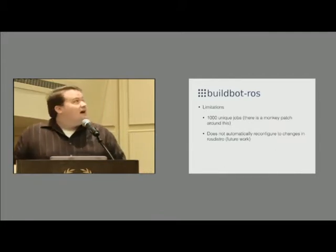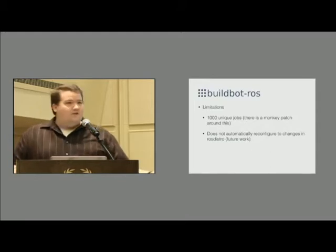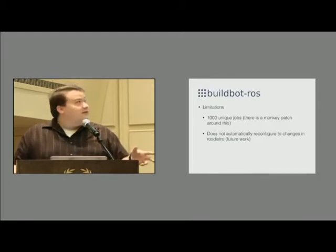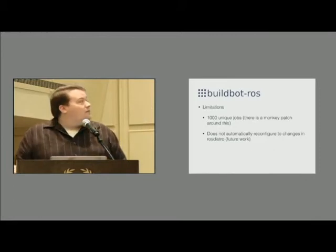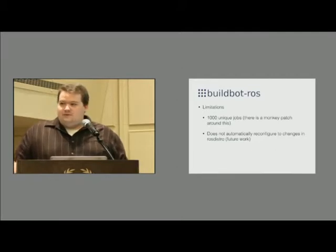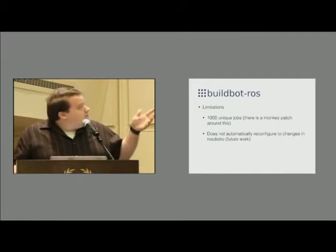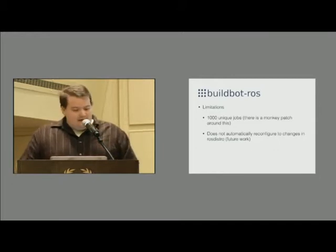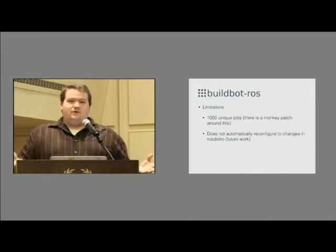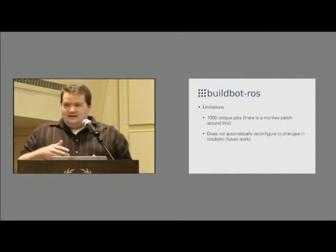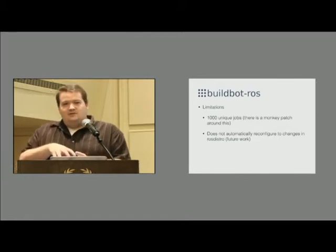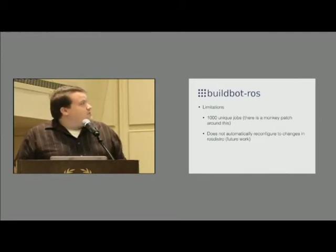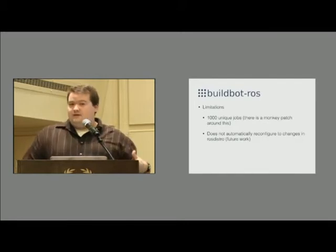As always, there are some limitations. In particular, there's one baked into BuildBot itself: it can really only handle about 1,000 unique names. You can actually bump that up with a little monkey patch applied to the BuildBot Python code — it's easy to update at runtime. 1,000 unique jobs — you may run into that at some point, although that's also just a lot of jobs to be running. When I use this, I typically don't want to rebuild all of ROS — that's eating up a lot of processor time. I'm usually just building a few packages of my own stuff on top of the regular Debians from the OSRF build farm.